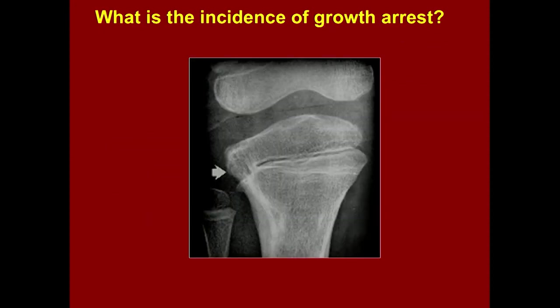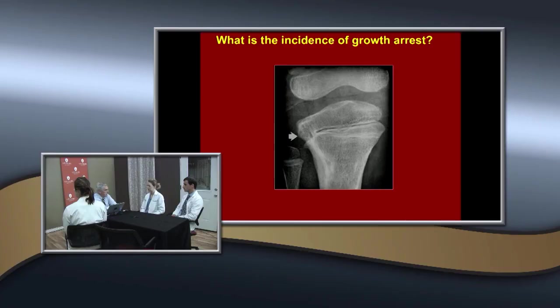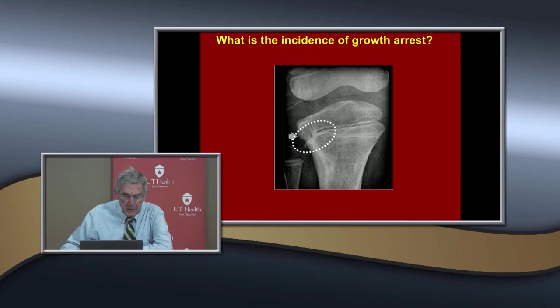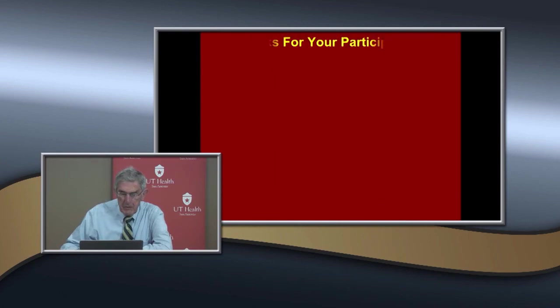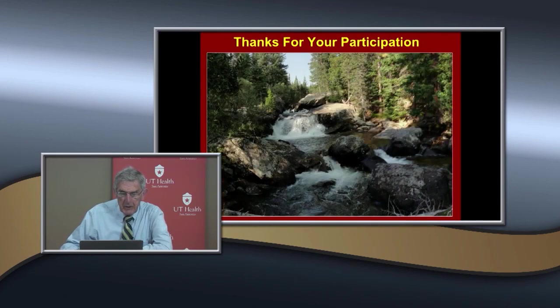What's the incidence of growth arrest in proximal tibial physeal fractures? It's much less than the distal femur — very rare, but it occurs in about 14 to 24 percent. Thank you very much for your participation.